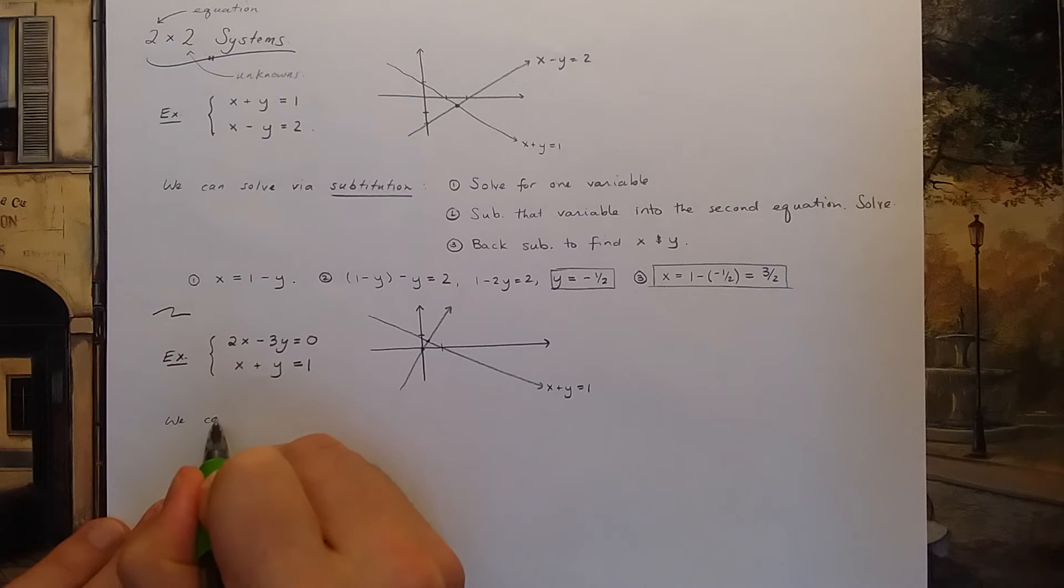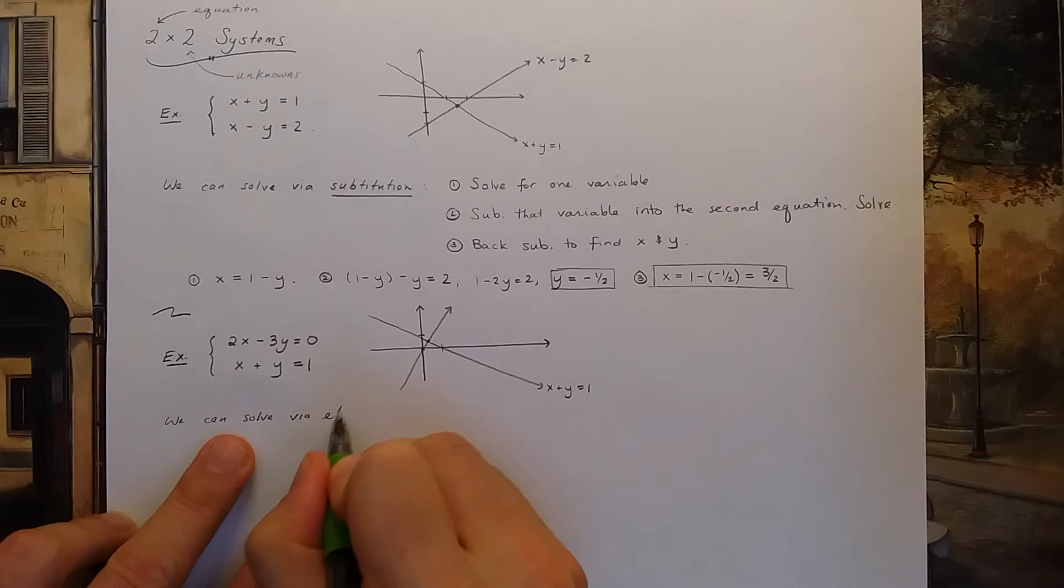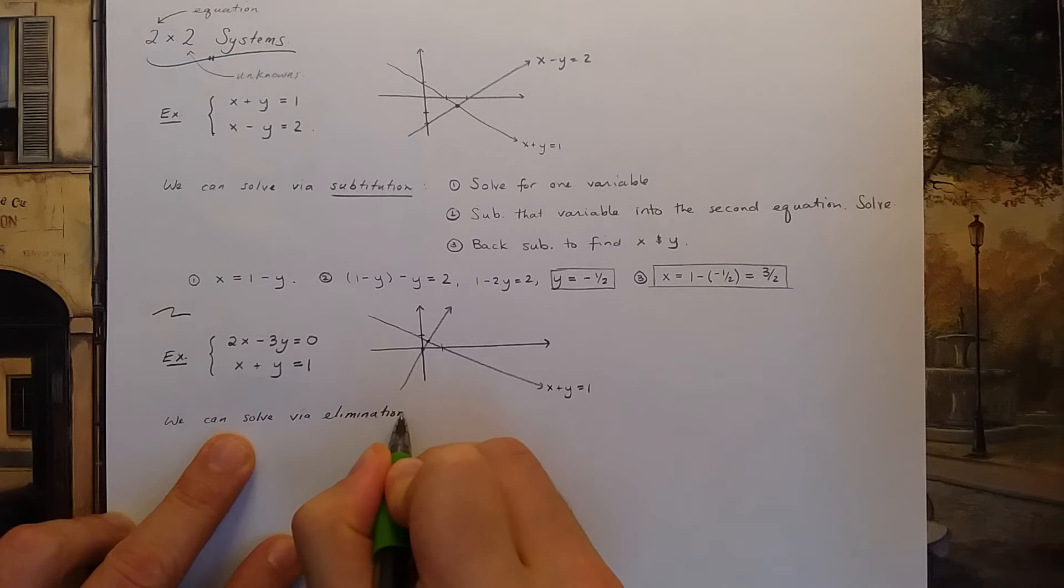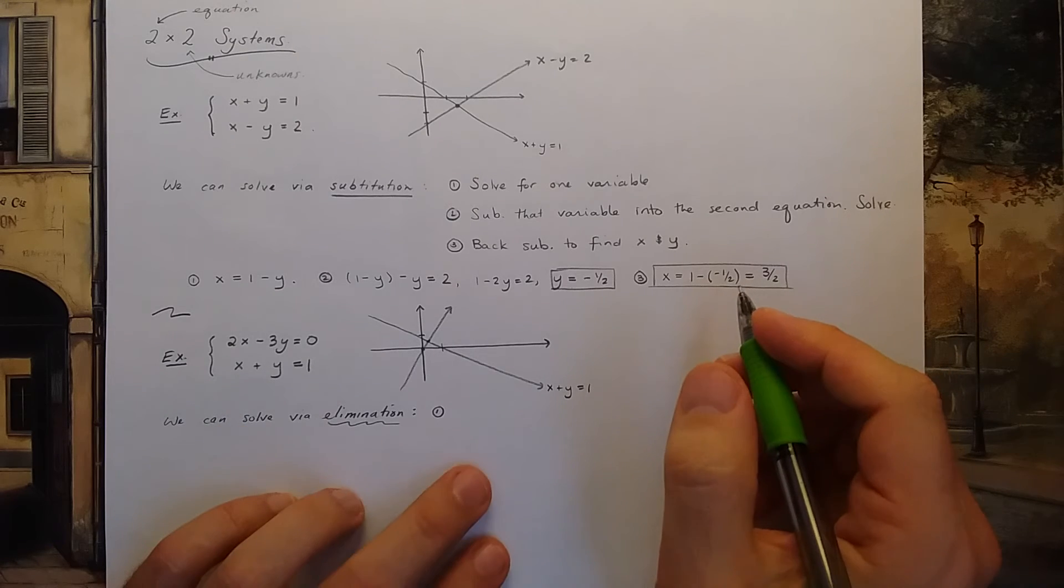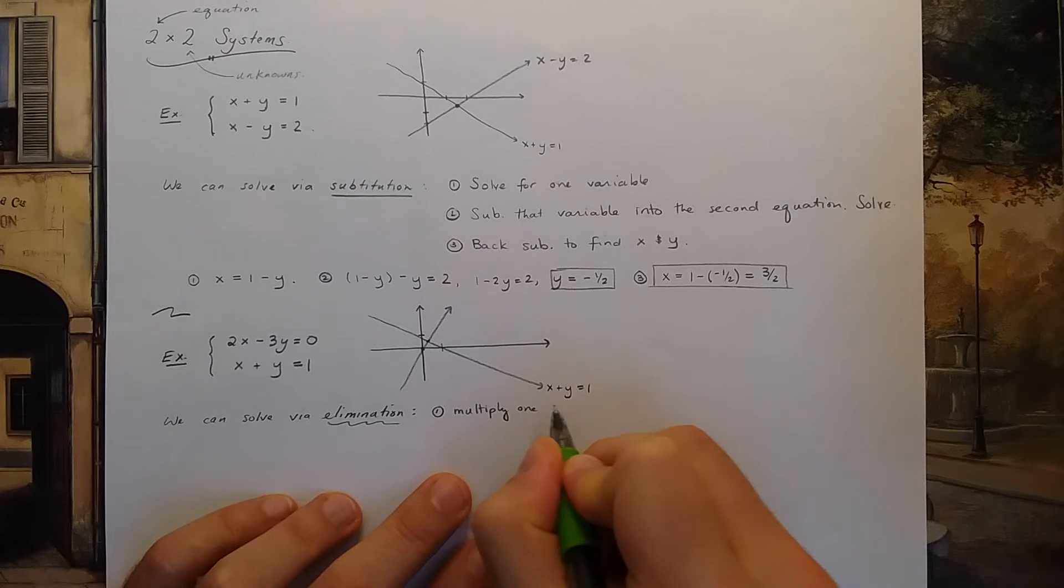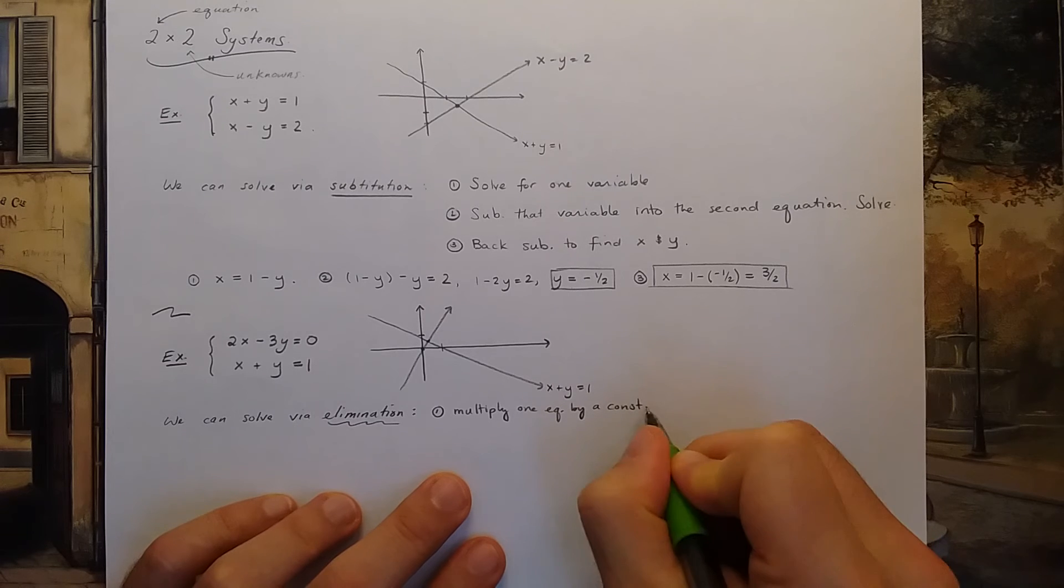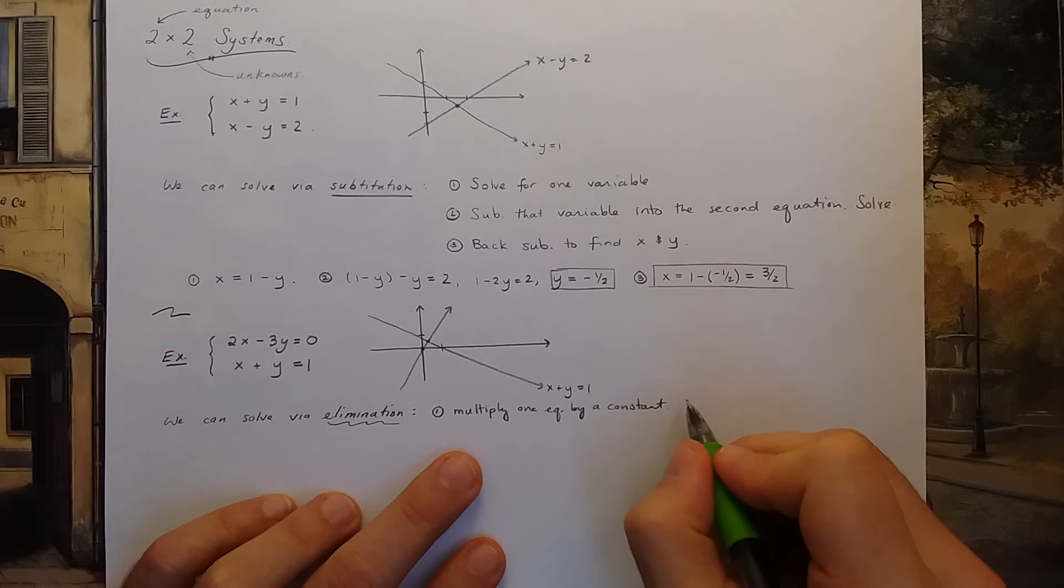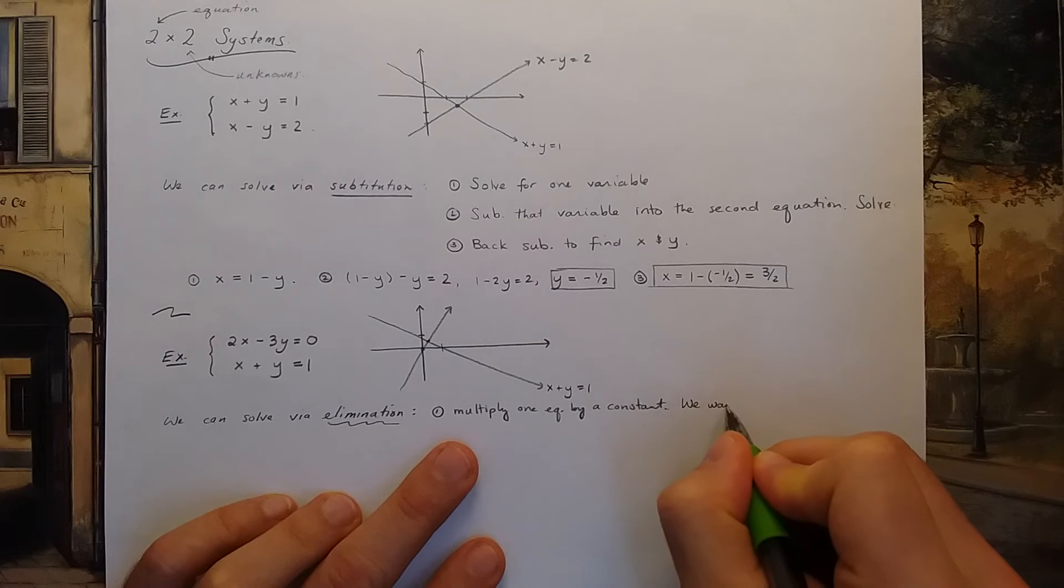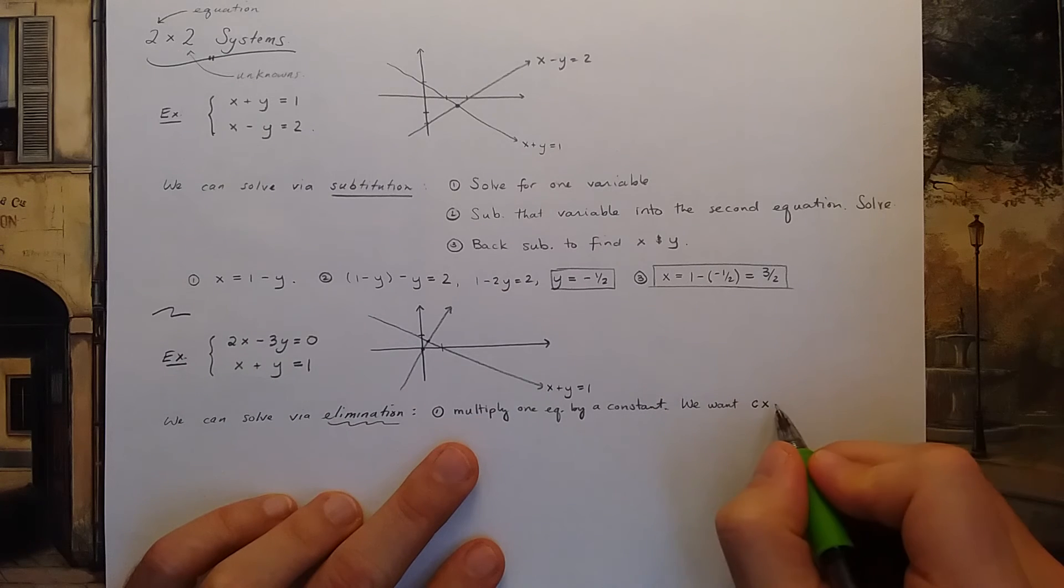We can solve via elimination. So elimination is a second approach. Let me give you a step-by-step process. Again, three steps. I'm going to first multiply one equation by a constant. We want to multiply by the correct constant. We want one equation to have c times x, so maybe 2 times x in one equation.